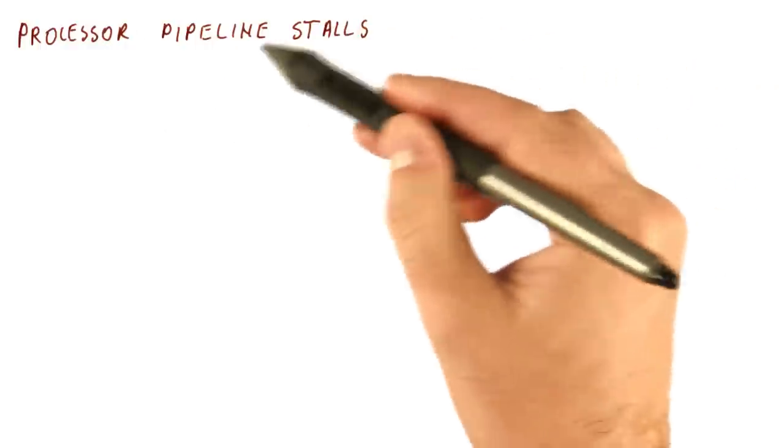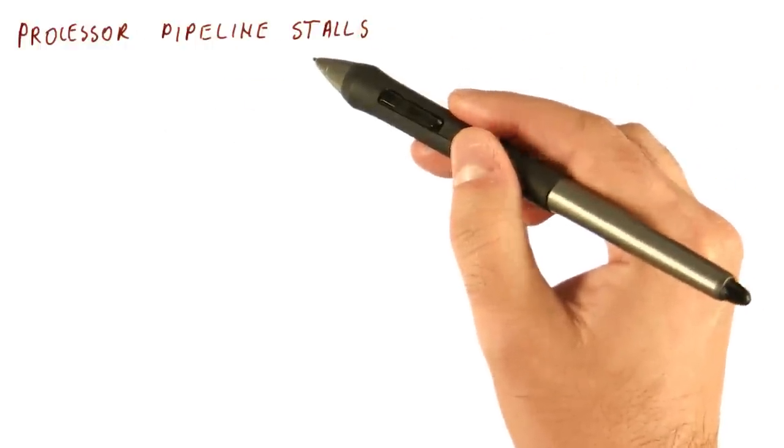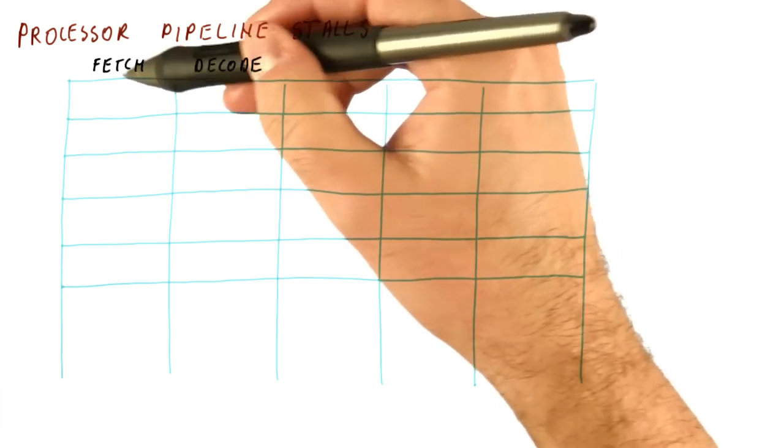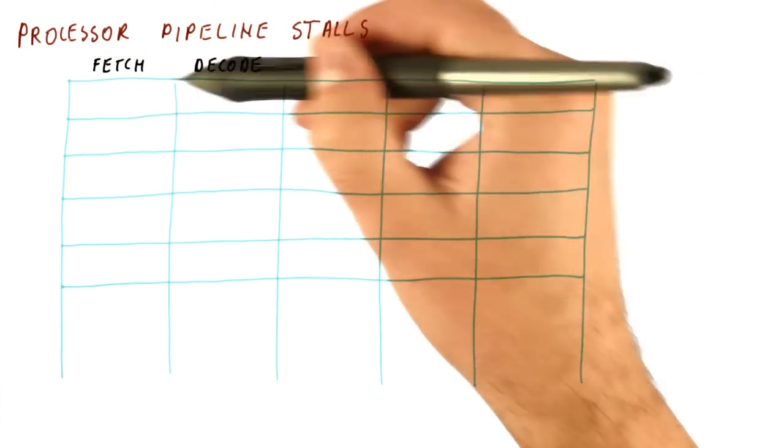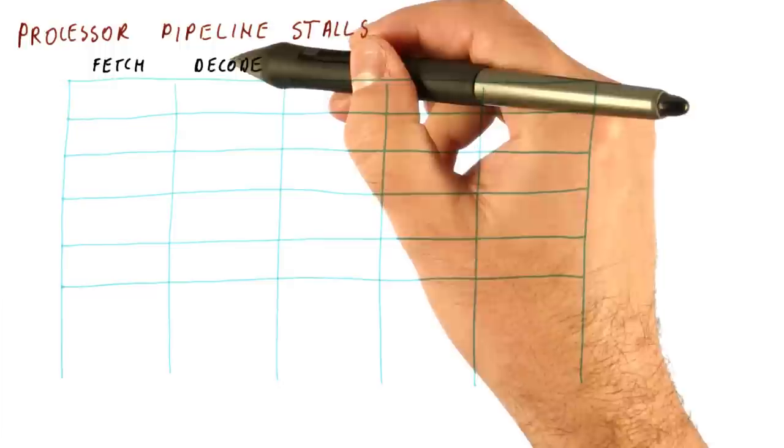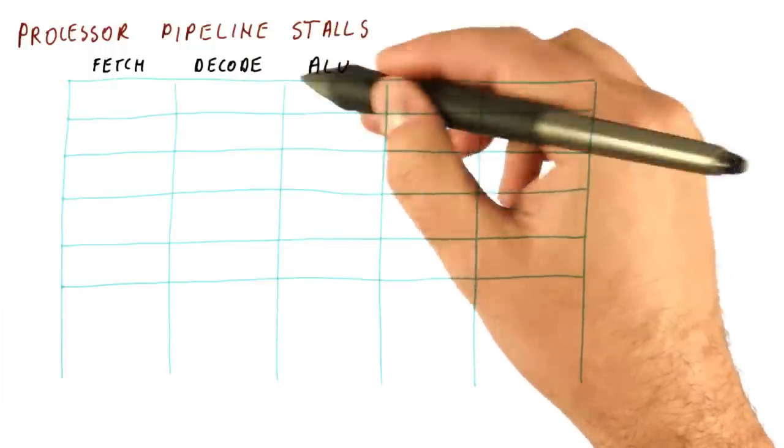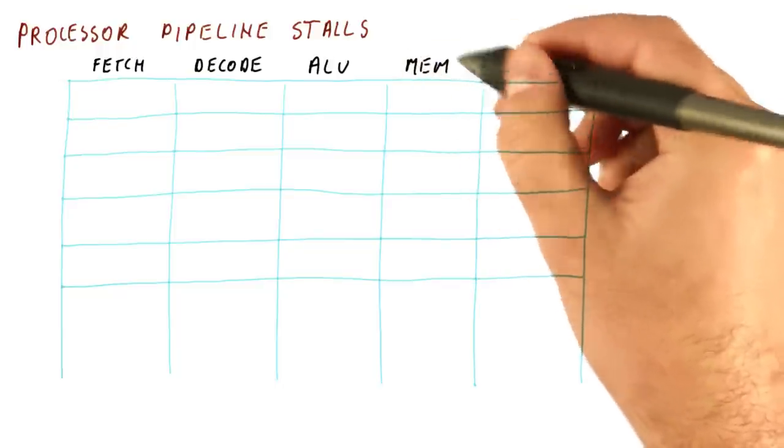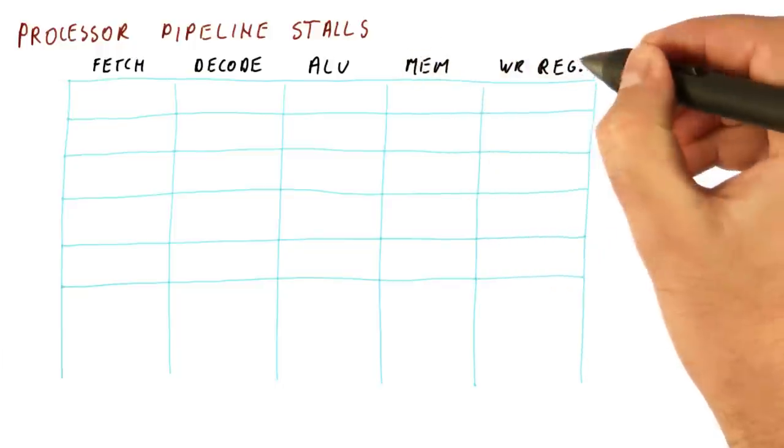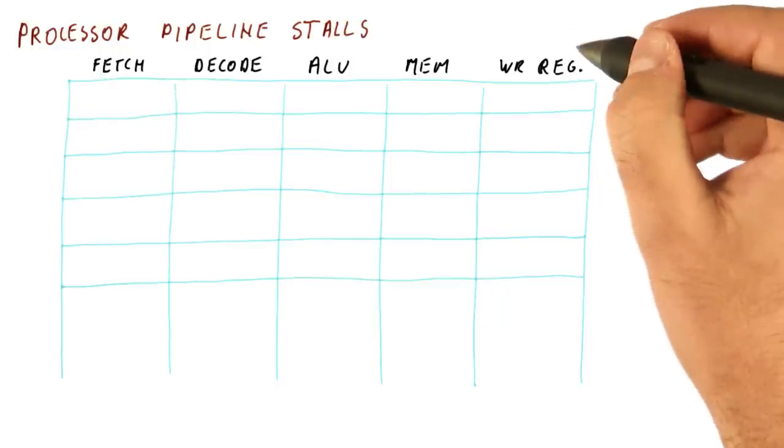So now let's look at processor pipeline stalls and how they can happen. Let's say we have a five stage pipeline and this is where we fetch the instruction, then we decode it and read registers. Then we use the ALU to compute the result of the instruction. Then we access memory, this is a load or store instruction. And then we write the result of the instruction to a register.